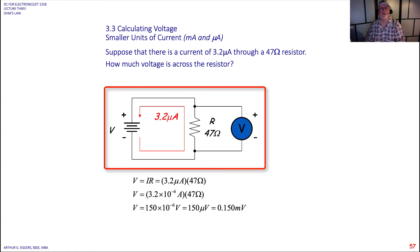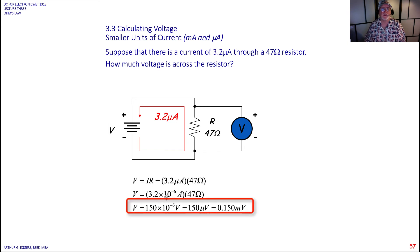Suppose there's a current of 3.2 microamps through a 47 ohm resistor. Again, this is like we've got a meter connected across the resistor and we're measuring what this voltage would be if we did not have to do the math. In this case, we're going to do the math. So 3.2 times 10 to the minus 6, 47 ohms resistance, we get 150 microvolts.